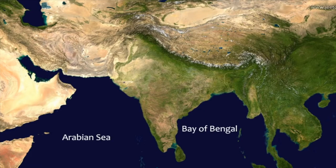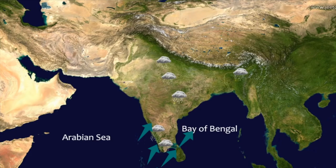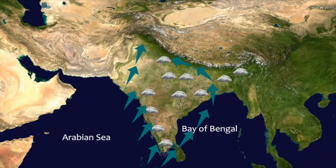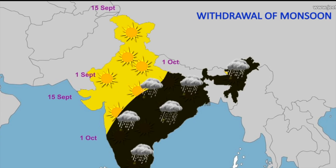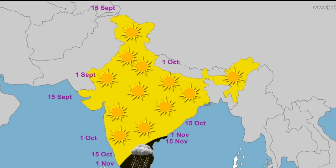Particularly in India, orographic uplift is a large factor in promoting rainfall. As air travels through India, it is uplifted by the Himalayan mountains, causing cloud formation and precipitation. In the winter, high pressure zones inhabit the area and inhibit most precipitation, causing a period of dryness.